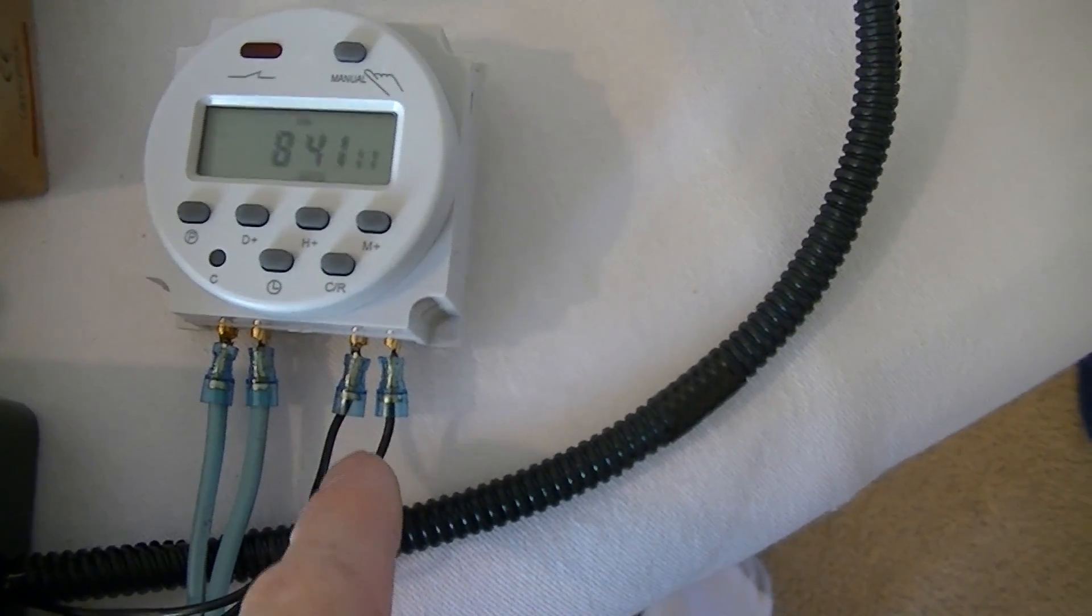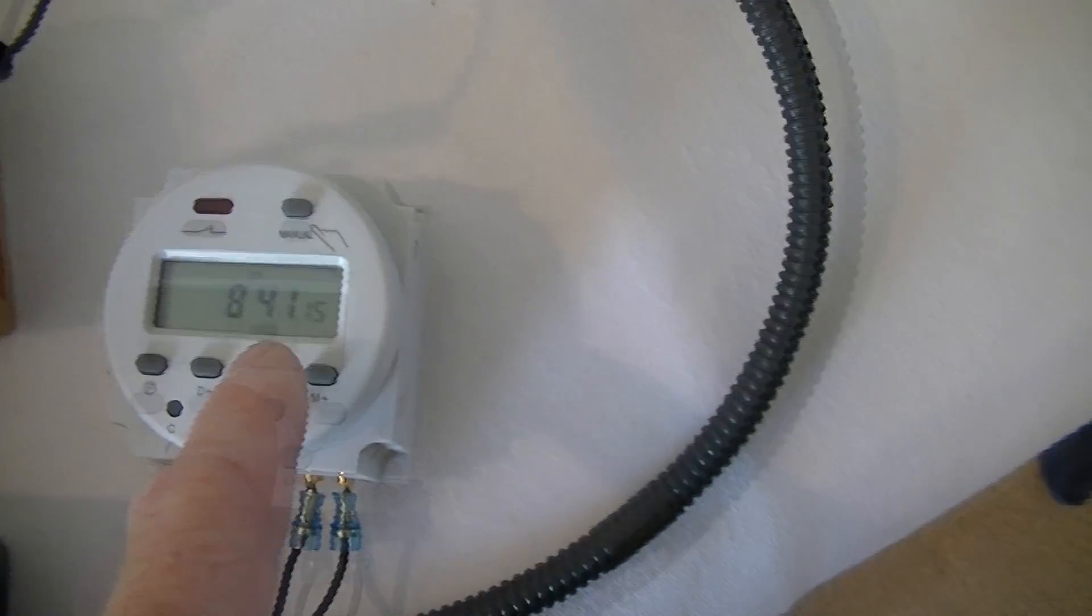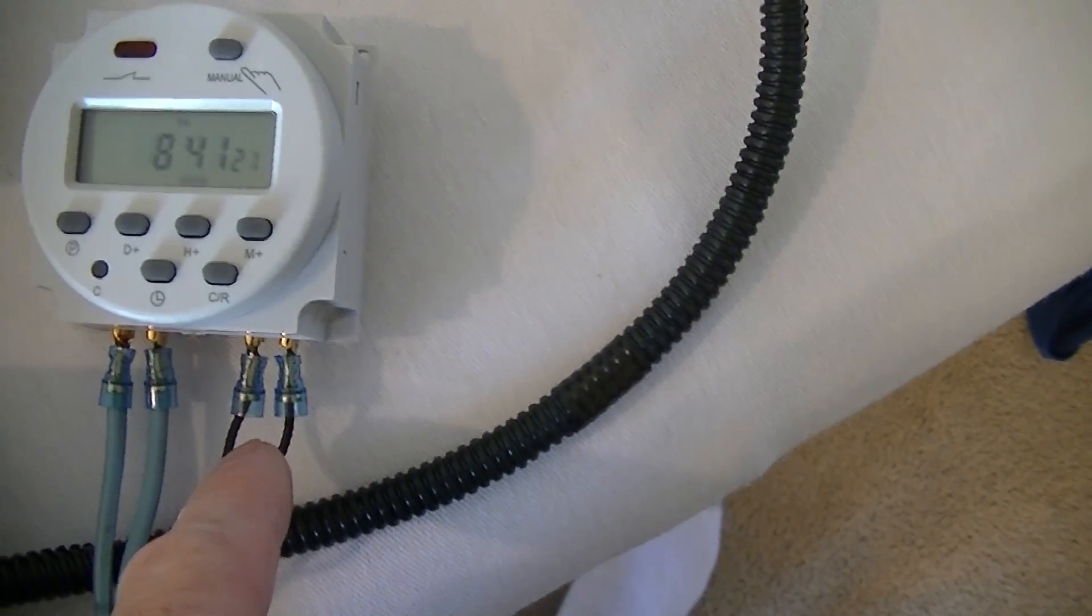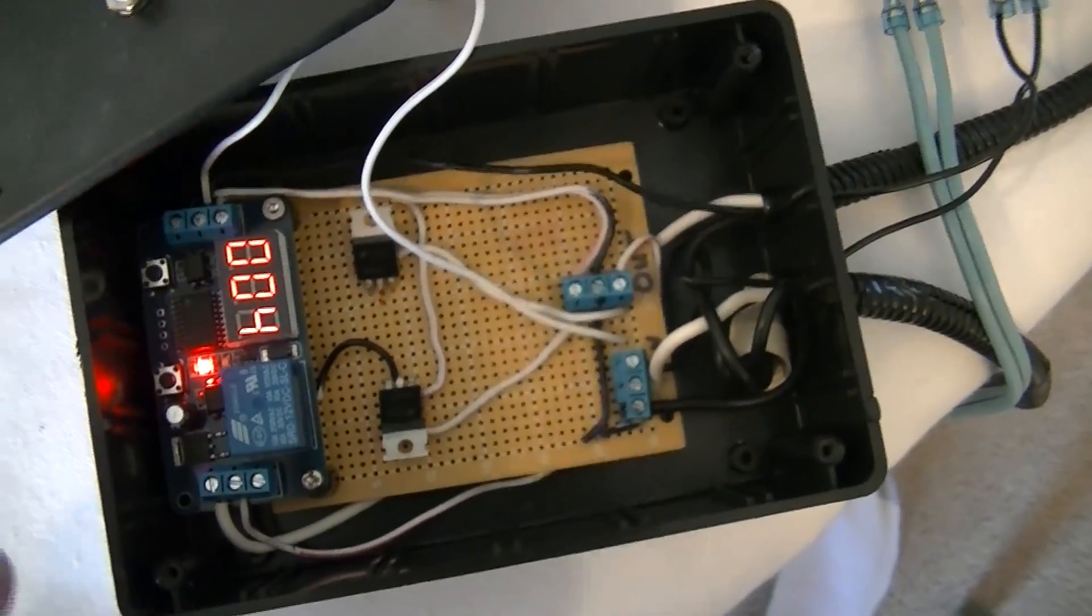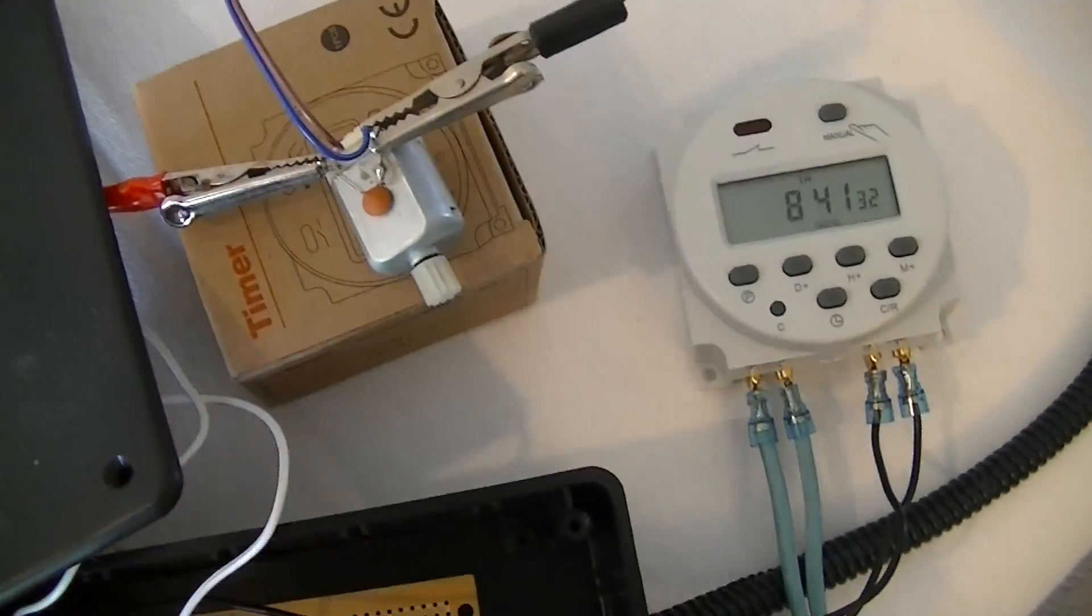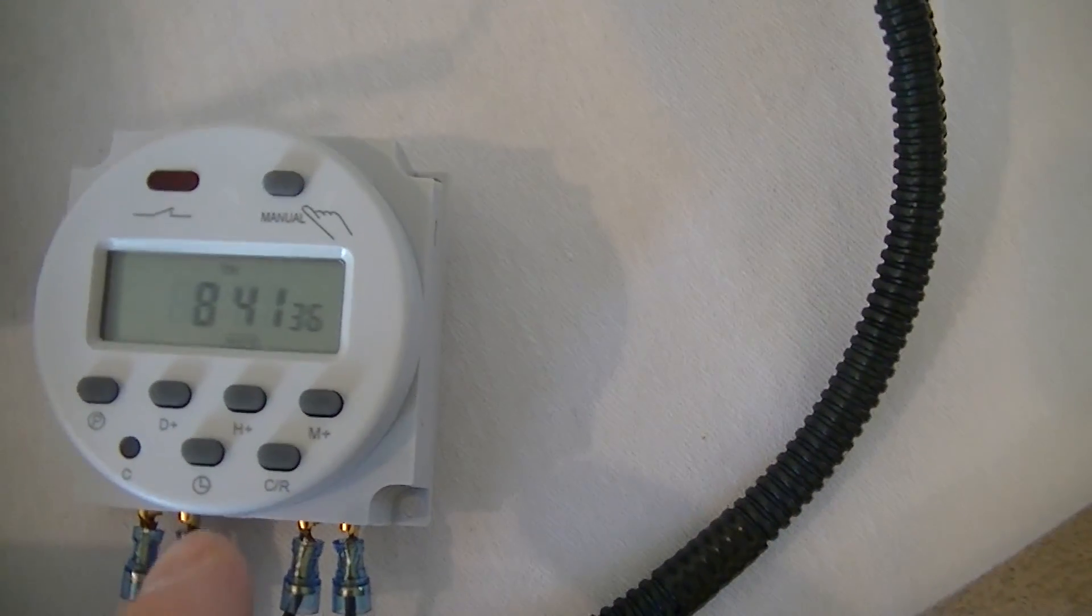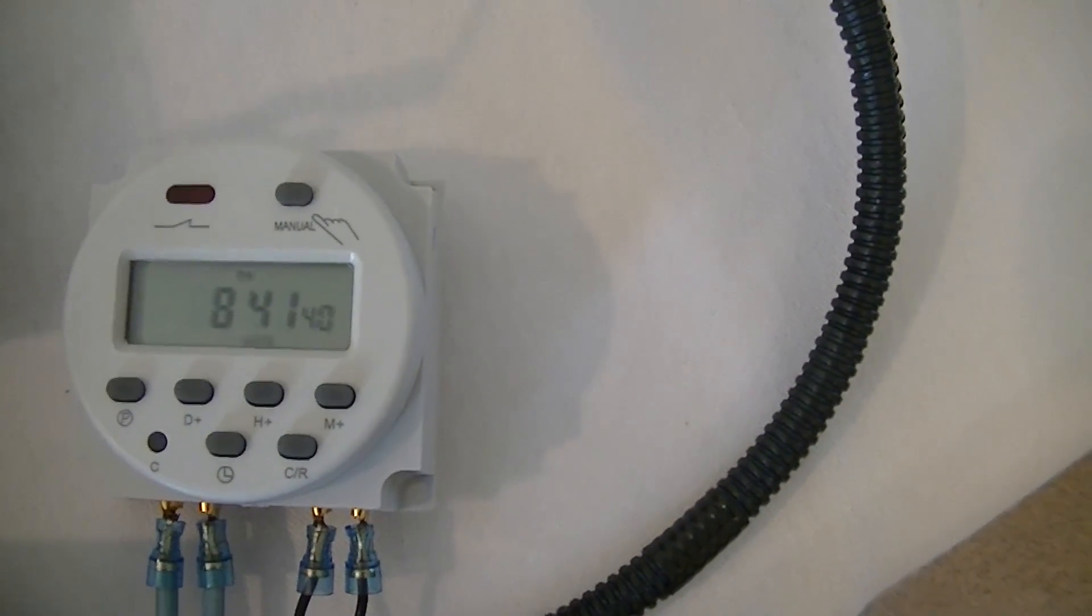These black wires are attached to the switch. When the timer goes off, it will connect those two wires together. When those two wires are connected together, it starts this timer and allows power to the motor. I have a sample motor to show you how it works. That timer is going to go off. I have it set for 8:42, so we'll see that in 20 seconds.